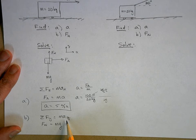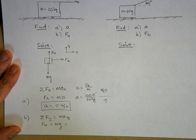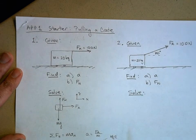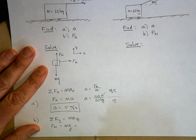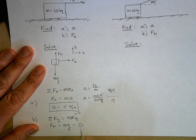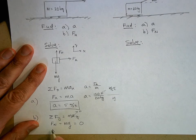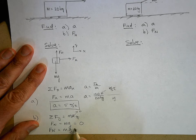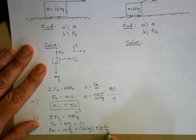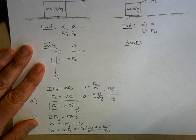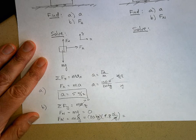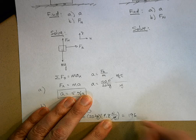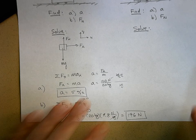Ma — what is the acceleration in the y direction for this crate? Look at it. In the y direction, what is this crate doing? Nothing. It's constrained. It's not going to fly into the air; it's not going to sink into the ground. So it's zero. Since the acceleration is zero, ma is zero. What does this mean? The normal force is just equal to mg. That's 20 kilograms times 9.8 newtons per kilogram. The kilograms cancel and I'm left with newtons. 20 times 9.8 is 196 newtons. That's my answer for part B.